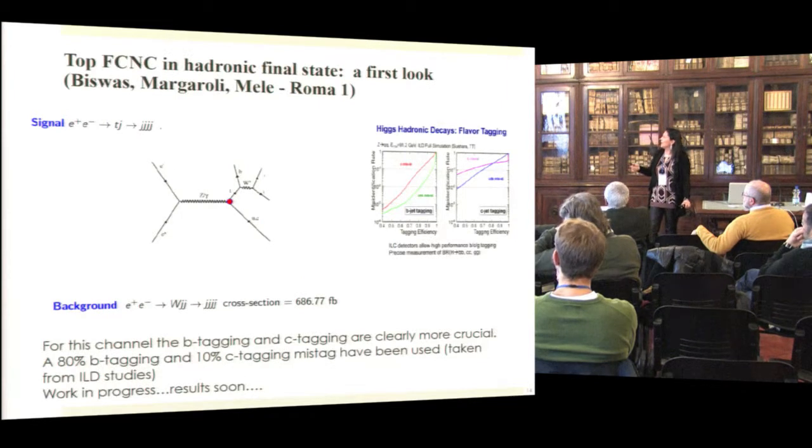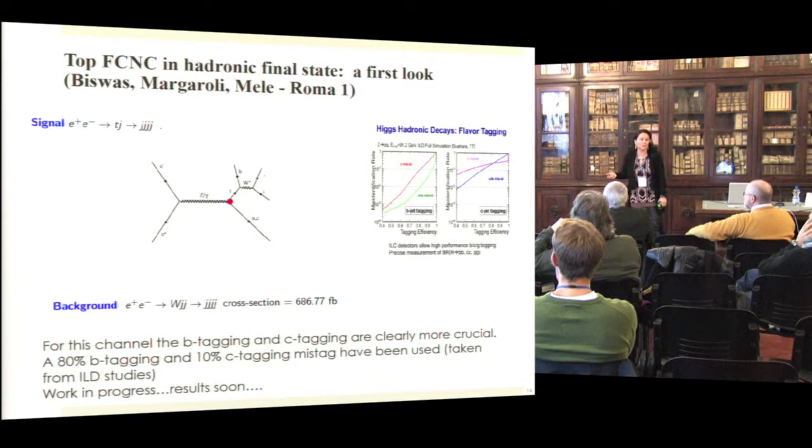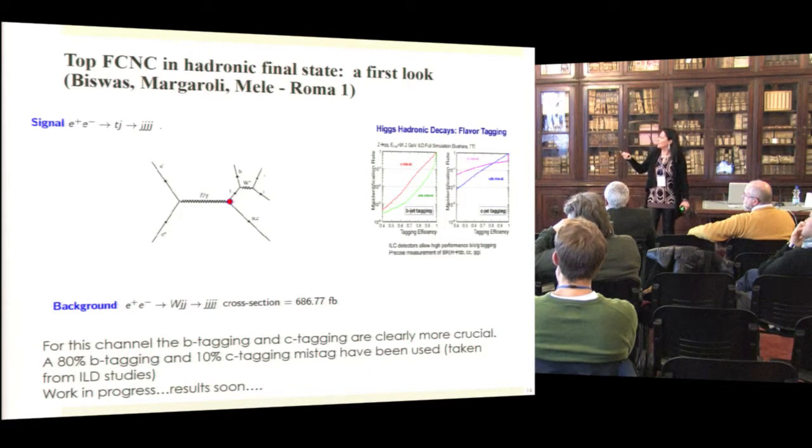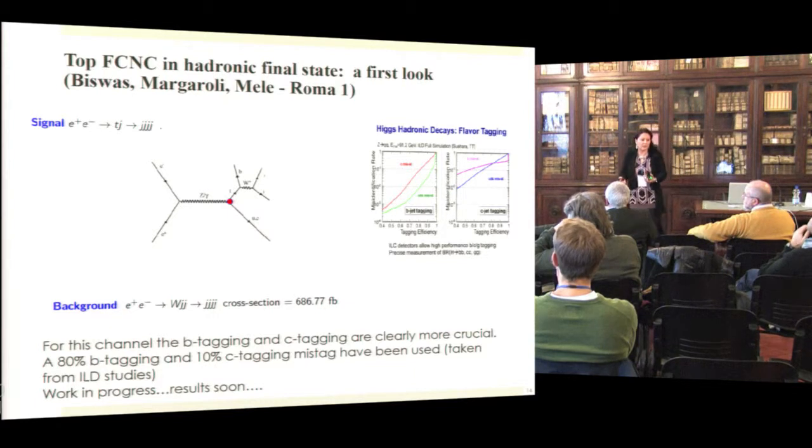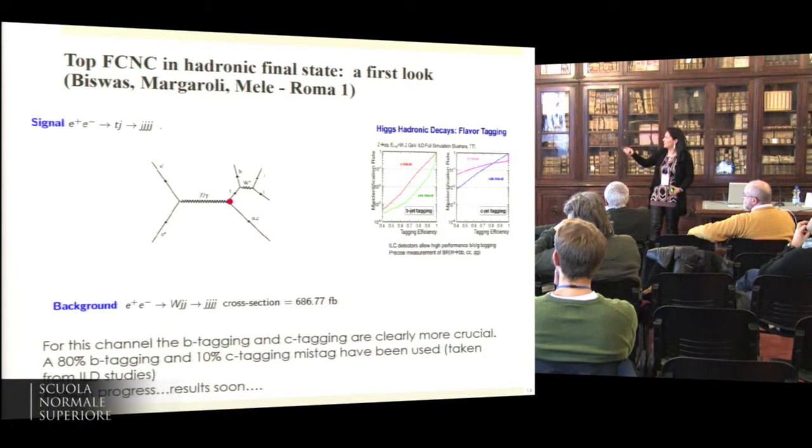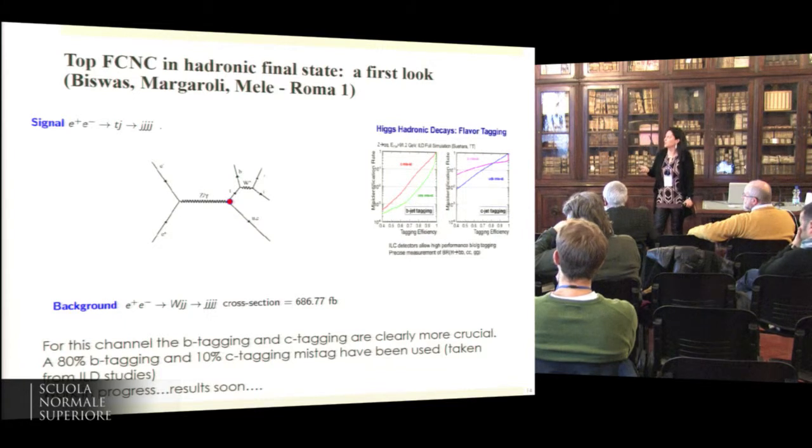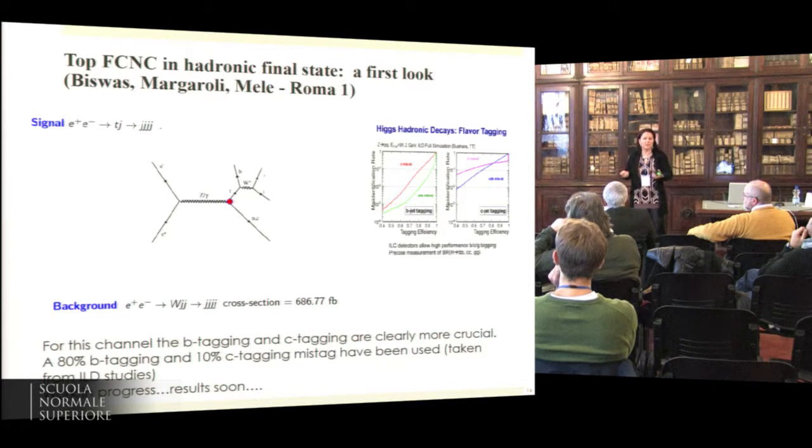Before I go to the final limit, the study that is ongoing on the fully hadronic final state from Rome with Enjoy, Business Margaroli and Barbara—in this channel the B tagging and the charm tagging of course are even more important in a fully hadronic channel. There is more combinatorics, so they are trying to exploit more the charge. We hope to see results soon; it seems from the first look extremely promising given the clean environment of e+e- collider, more than you would imagine for this kind of low multiplicity events in a hadron collider.